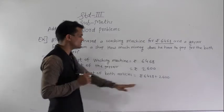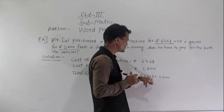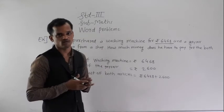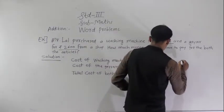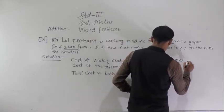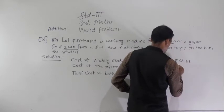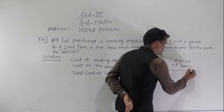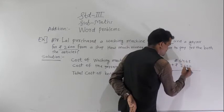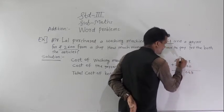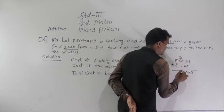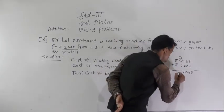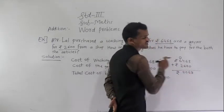The total cost of both articles = ₹6468 + ₹2600. Add these two numbers: 8 plus 0 is 8; 6 plus 0 is 6; 4 plus 6 is 10, write 0 and carry 1; 6 plus 2 is 8, plus 1 carry is 9. So the total is ₹9068.